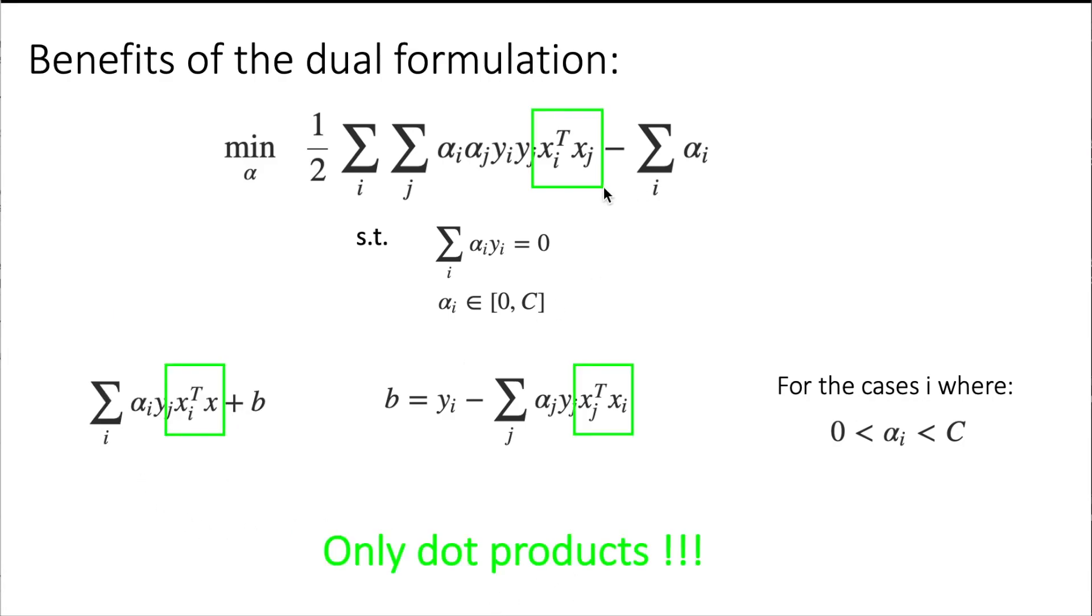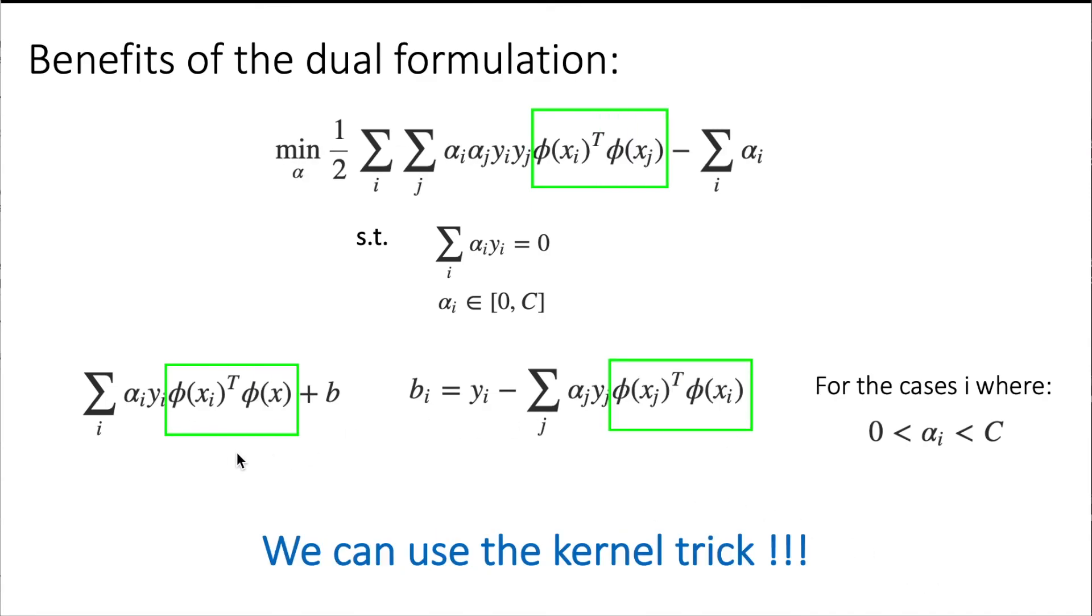So this again ends up in this situation where we only need or we only depend on the training points through these dot products. And this is good because we can apply any kernel here and we can end up fitting a highly nonlinear model just by using the kernel trick, without the cost of calculating explicitly this phi transformation to the x, as we saw in previous videos.